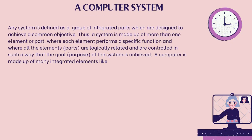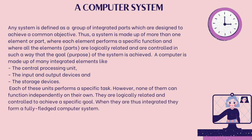A computer system. Any system is defined as a group of integrated parts which are designed to achieve a common objective. Thus, a system is made up of more than one element or part, where each element performs a specific function and where all the elements are logically related and controlled in such a way that the goal of the system is achieved. A computer is made up of many integrated elements like the central processing unit, the input and output devices, and the storage devices. Each of these units performs a specific task; however, none of them can function independently on their own. They are logically related and controlled to achieve a specific goal — when integrated, they form a fully-fledged computer system.